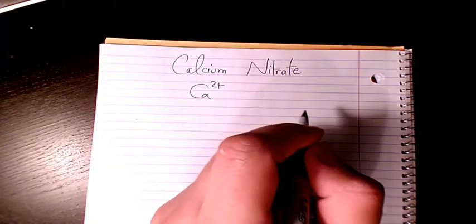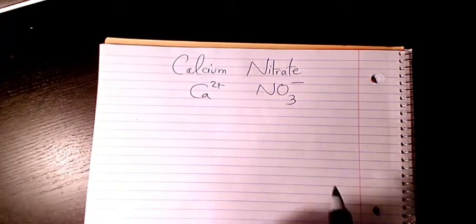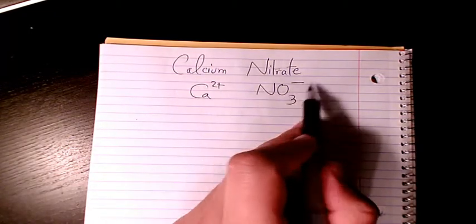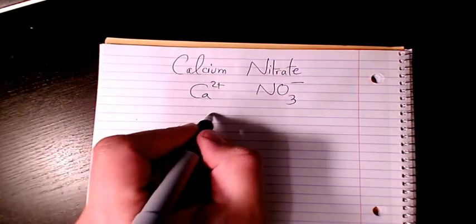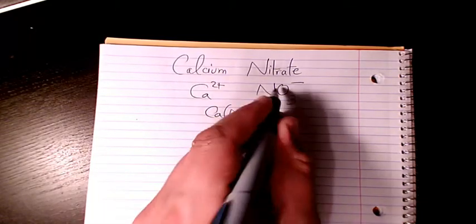And nitrate is a polyatomic ion, so it's NO3-. The charge here is minus 1, the charge here is plus 2. So it will be Ca NO3, and 2 is going to sit here, 1 is going to sit here. So it's going to be Ca(NO3)2.